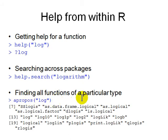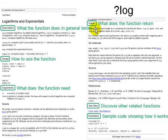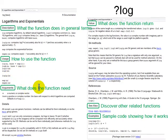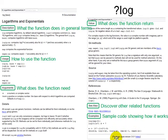The `apropos log` command will show you all the functions using 'log' as part of the name. What does help contain? It contains a description of what a function does — say the log function — how to use the function, the parameters, the return value, related functions, and some sample code. Most people just look at the sample code. You also need to know which package the function is in, in case you need to upgrade it.